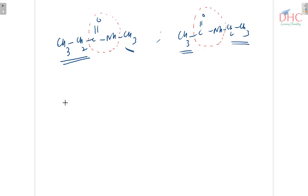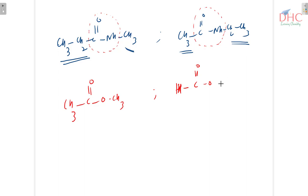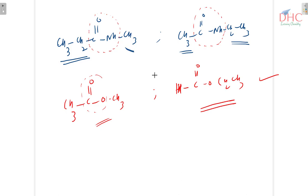In a similar way, you can look for other examples. For instance, CH₃–C=O–O– followed by CH₂–CH₃ is an ester with methyl on one side and ethyl on the other side. These can be examples of metamers. I hope you understand it.